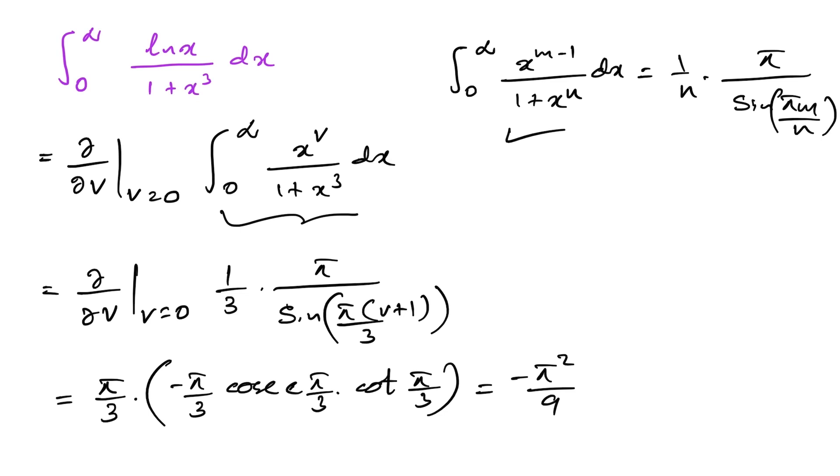2 over square root of 3 times 1 over square root of 3. Then if we simplify, minus 2 times pi square over 27. This is the answer for this integral.